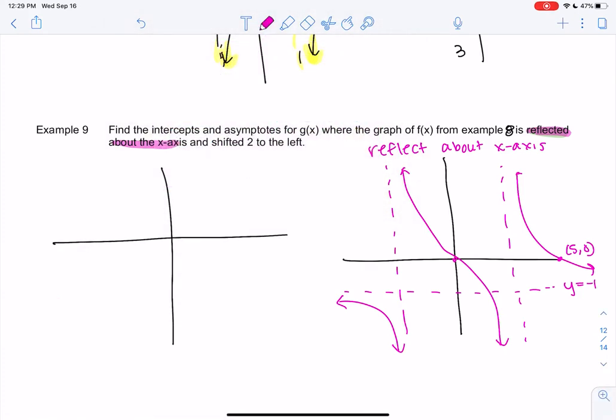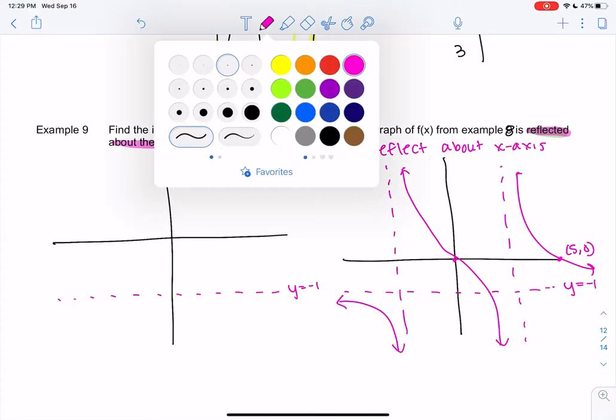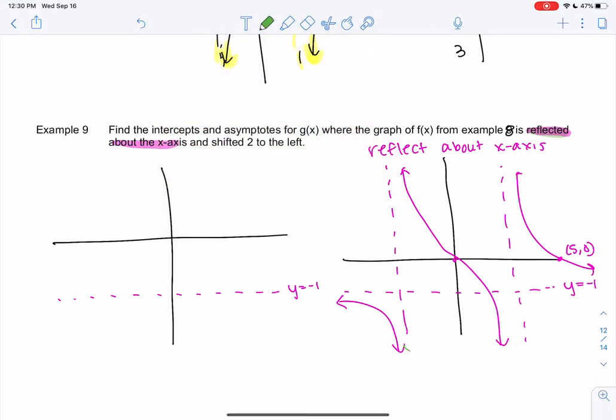So the y equals negative 1 doesn't change because that doesn't move left or right. But my asymptotes do move. So they were at 2 and negative 2. But we're going to go over 2 now. So 2 to the left would be negative 4 and 0. Because I'm moving these over 2. And then everything just moves over 2. So the shape is the same but 2 to the left.